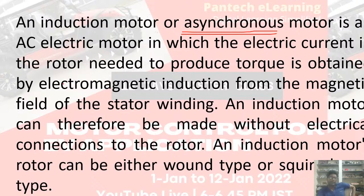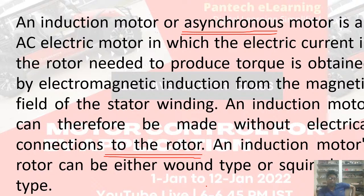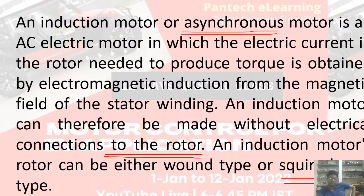The electric current in the rotor needed to produce torque is obtained by electromagnetic induction from the magnetic field of the stator winding. An induction motor can therefore be made without any electrical connection to the rotor — that's a great advantage. In a DC machine, you need to give some excitation to the rotor to make it a magnet, which is not required for an induction machine, making construction much simpler. The rotor can be either a squirrel cage type or a wound type, but most people prefer the squirrel cage type due to its construction simplicity and cost-effectiveness.